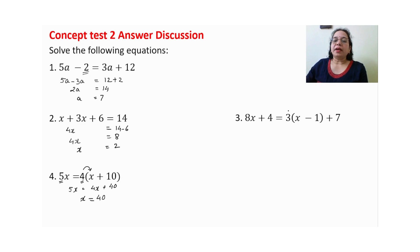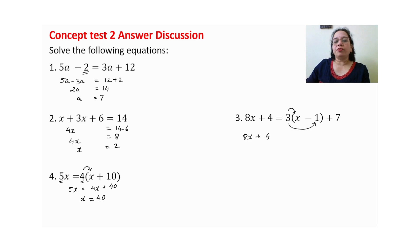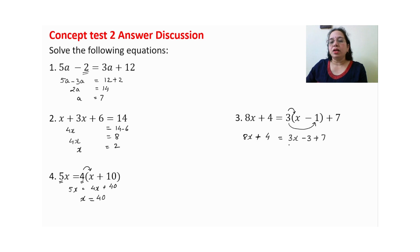यहाँ पर भी bracket है, तो हम यहाँ पहले distributive property का use करेंगे। So 8x plus 4 — left hand side में हम add or subtract नहीं कर सकते हैं, इसलिए bracket open करिए। 3x minus 3 plus 7 — right hand side में 2 like terms हैं, हम पहले इन्हें solve कर लेंगे।